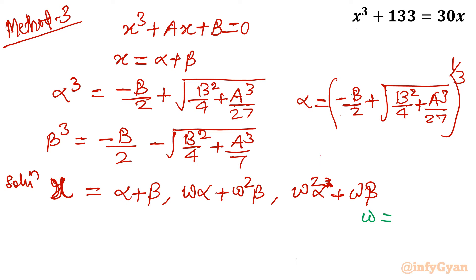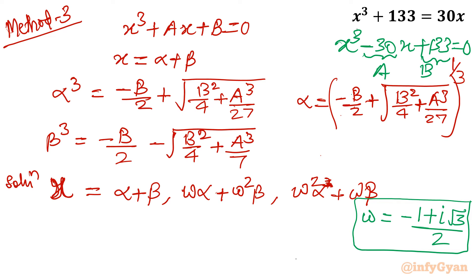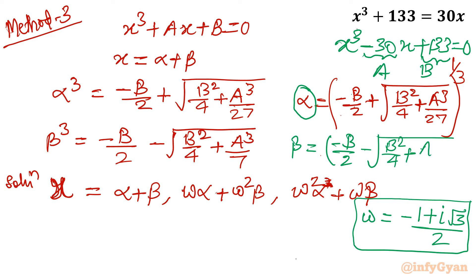Putting the values in, alpha cubed equals minus 133 over 2 plus the square root of b squared over 4 plus a cubed over 27. Computing 30 cubed over 27 with the minus sign, we get a value of minus 8. Taking the cube root of both sides gives alpha cubed to the power 1 over 3, which equals minus 2. So alpha equals minus 2.